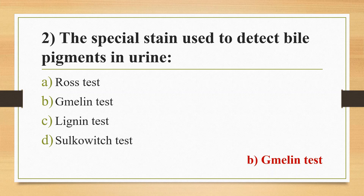Rose test is a milk test for ketosis in dairy cows. Lignin test is a test for diagnosis of sulfonamide crystalluria. Sulkovich test is a urine calcium test.